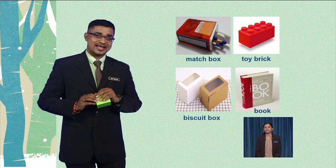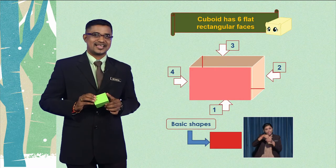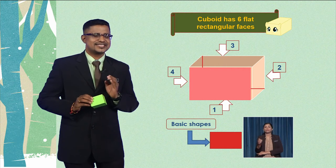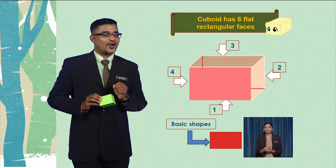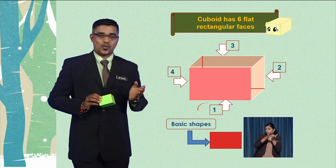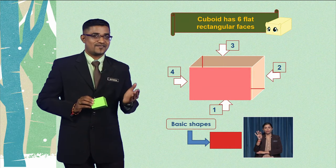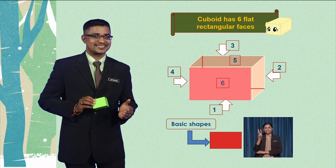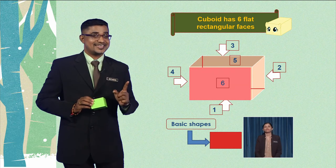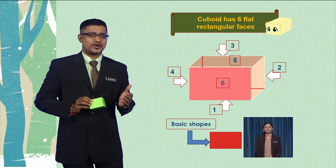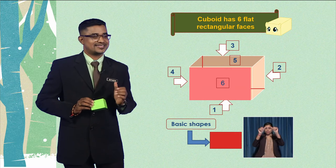Come on now! Let's see the components of the cuboid. The cuboid has 6 flat rectangular faces. Are you ready to count with me? 1, 2, 3, 4, 5 and 6. Yes, well done! The total is 6. The basic shape of the cuboid is a rectangle.